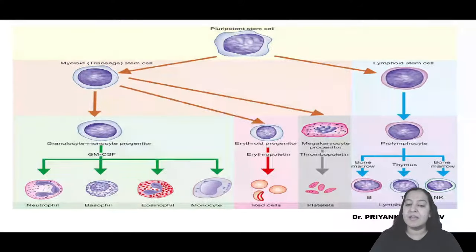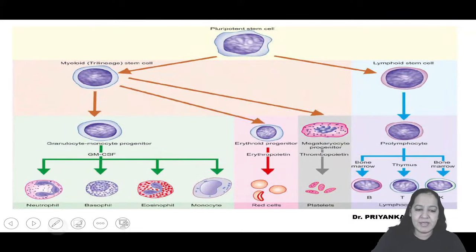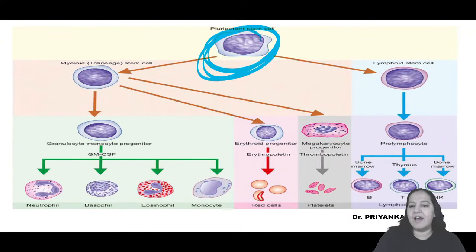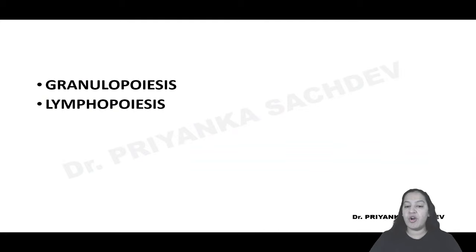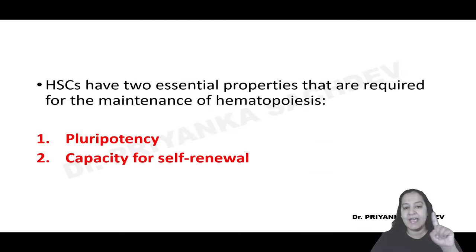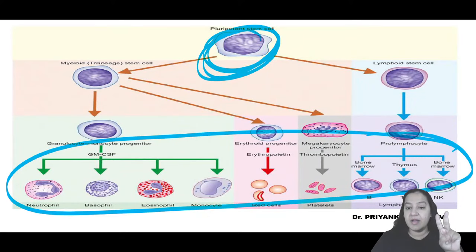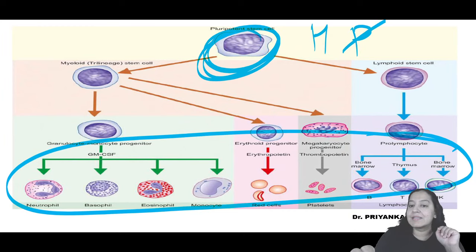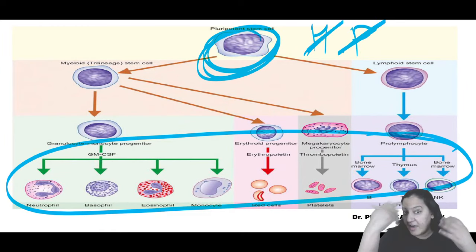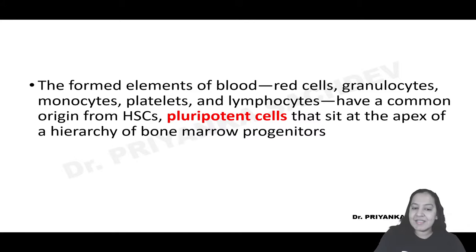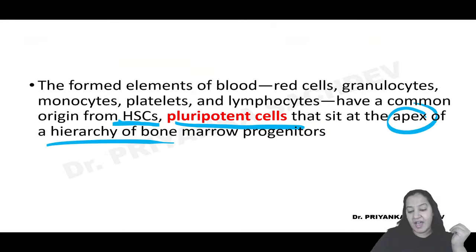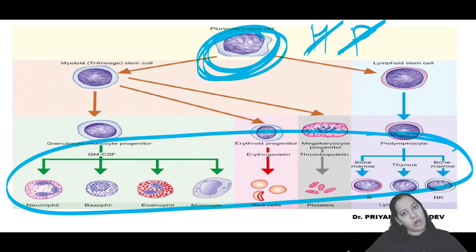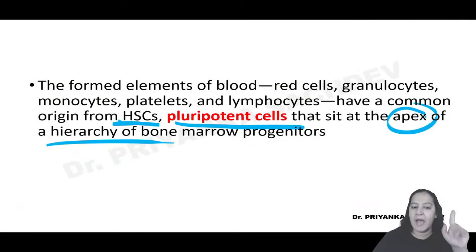The phenomenon of formation of all cells - RBCs, WBCs, and platelets - from a hematopoietic stem cell is known as hematopoiesis. Hematopoietic stem cells are pluripotent cells because they are at the apex of the hierarchy. From this cell only, all cells in the blood - RBCs, platelets, and the five types of WBCs - are formed. They are at the apex of hierarchy.